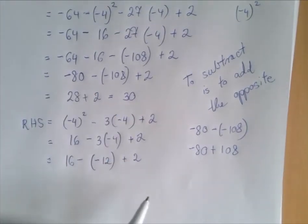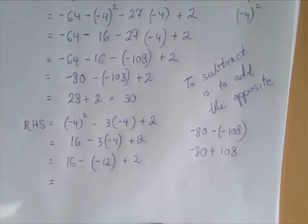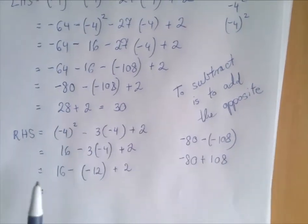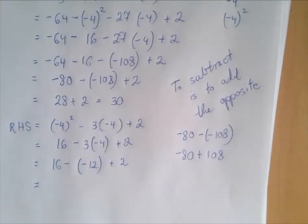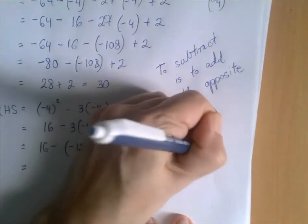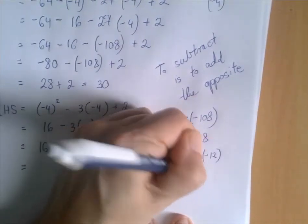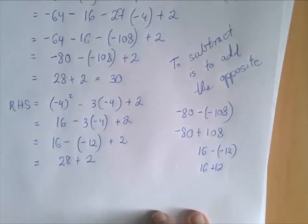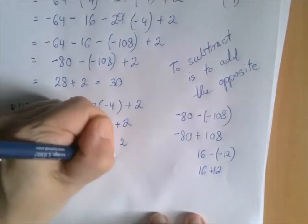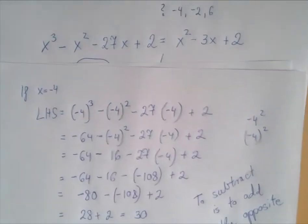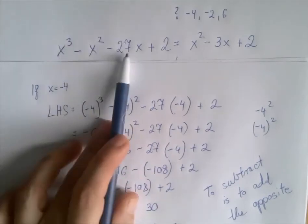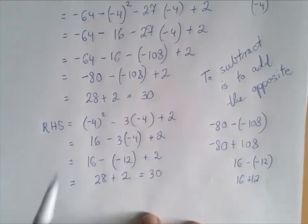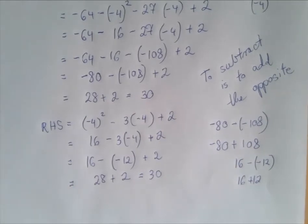And now we go left to right — first the subtraction. To subtract is to add the opposite. So 16 minus negative 12 is the same as 16 plus 12, and that's 28. And 28 plus 2 is 30. So we got that if x is negative 4, then both the left-hand side and the right-hand side of this equation are 30. That means x equals negative 4 is a solution of this equation.